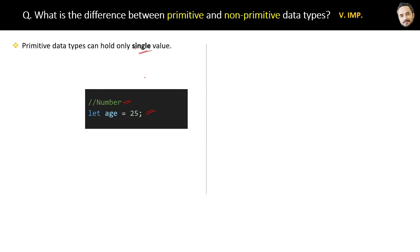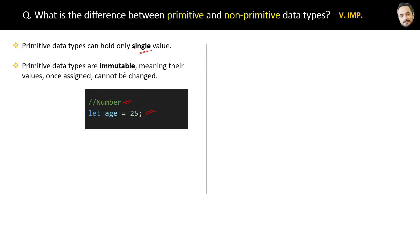The second point about primitive data types is that they are immutable, meaning their values, once assigned, cannot be changed. For example, if you change the value of a number — which is a primitive data type — like this, we assign a new value to the variable `age`. From outside it looks like the variable value is modified, but internally a new variable `age` is created by JavaScript's memory.